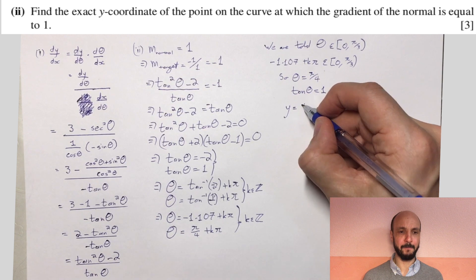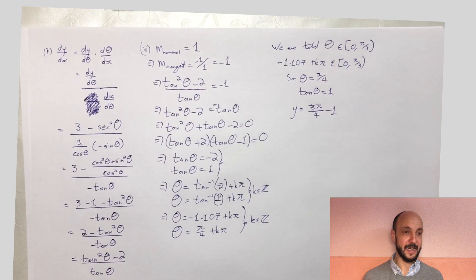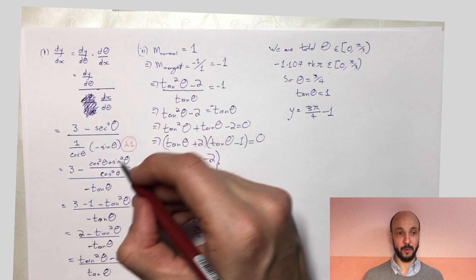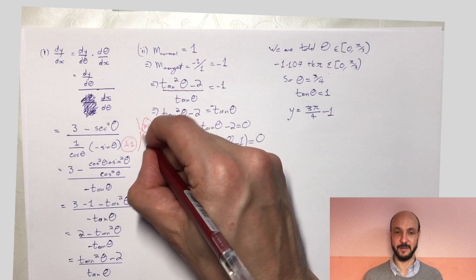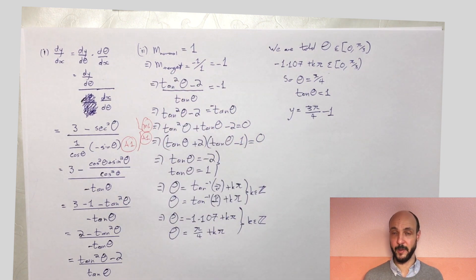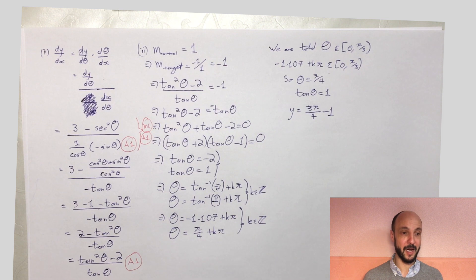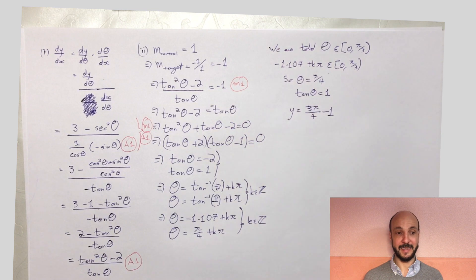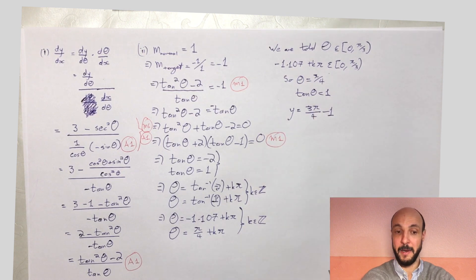So where did we get the marks on this part? We got one accuracy mark for getting the denominator dx/dθ accurately, and we got one method mark for setting it out as dy/dθ over dx/dθ with the values in, and an accuracy mark for getting those values correctly in there, and then a following accuracy mark for following it all the way through to get (tan² θ - 2) over tan θ. We then got a method mark for putting our dy/dx from the first part equal to minus 1, seeing that that was the tangent related to the normal of 1. We then got a method mark for getting a quadratic in tan θ and factorising it, and we got an accuracy mark for the final answer of 3π/4 minus 1.